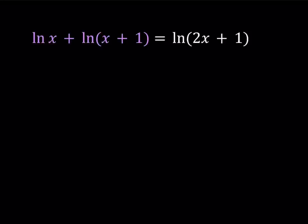We have ln x plus ln(x+1) equals ln(2x+1). One of the things that I'd like you to notice about this equation is that if you add x and x+1, you get 2x+1. So this equation is kind of of the form ln a plus ln b equals ln(a+b).